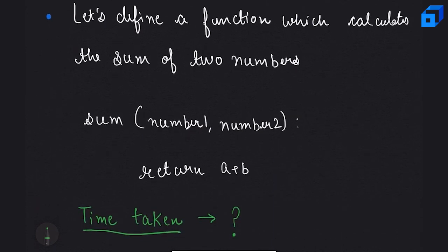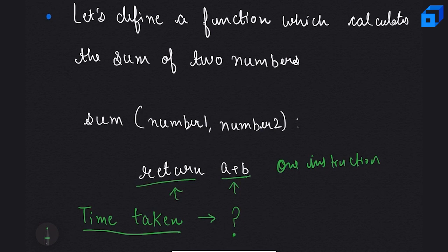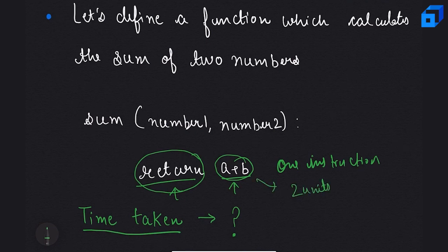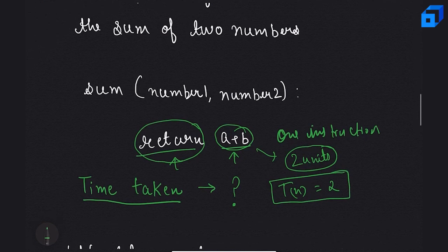This function has only one instruction, which contains one arithmetic statement and one return statement. As per our model machine, arithmetic statements take one unit of time and return statements also take one unit of time, so this instruction takes two units of time in total. Irrespective of the input, this function always completes in two units of time, so T(n) = 2 — a constant function.